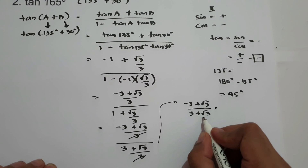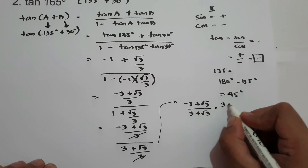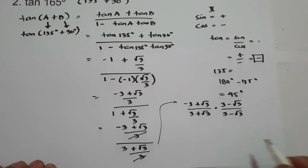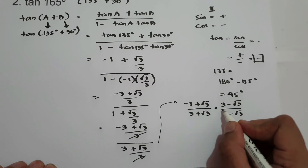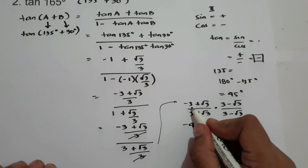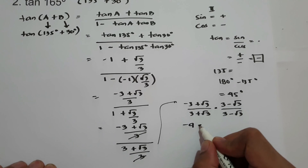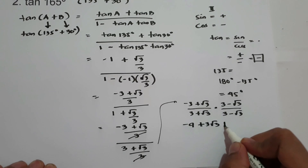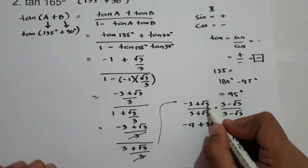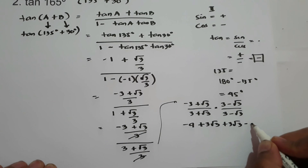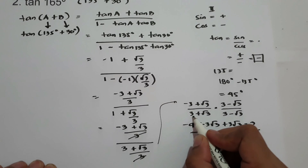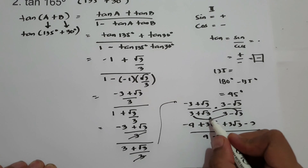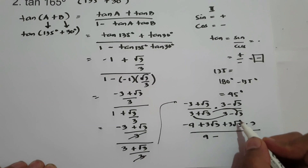We conjugate to eliminate the radical, multiplying by (3 - √3)/(3 - √3). In the numerator: -3 times 3 = -9, then -3 times (-√3) = +3√3, then √3 times 3 = 3√3, and √3 times (-√3) = -√9 = -3. In the denominator: 3 times 3 = 9, minus (√3)² = 3.